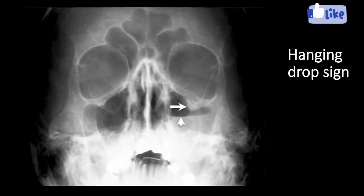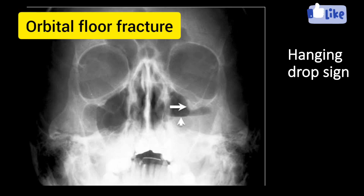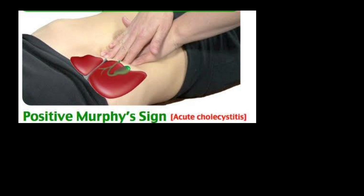Hanging drop sign: it is an indicator of orbital floor fracture. It is due to herniation of the inferior oblique and inferior rectus muscle into the antrum, and is best demonstrated in Waters' projection.